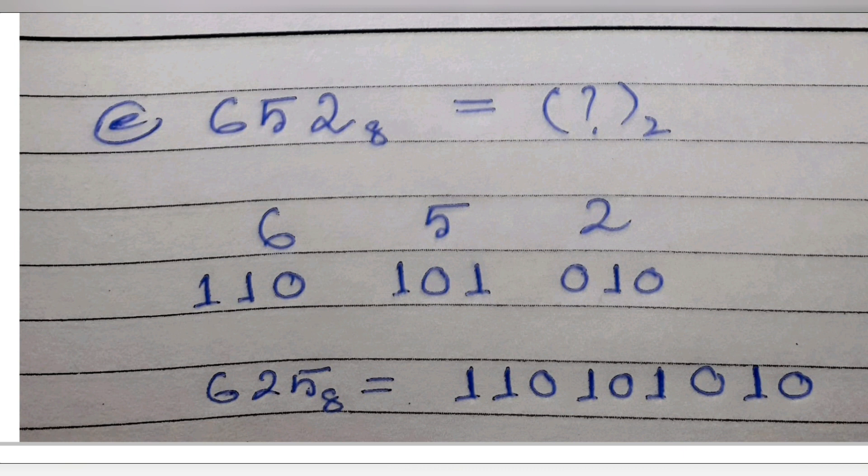If anywhere we get 2 digits then we can add an extra 0, means we have to make all the digits as 3 digit numbers. So we can add 0 if it's required. That's why our correct answer is 110101010.